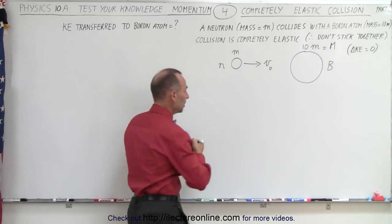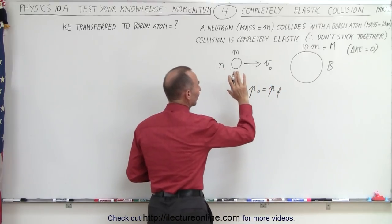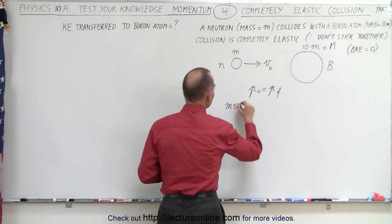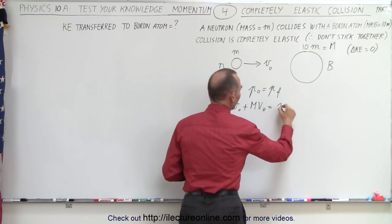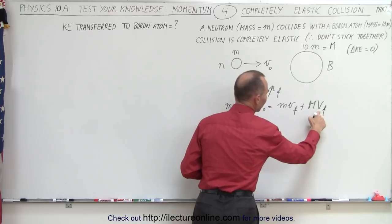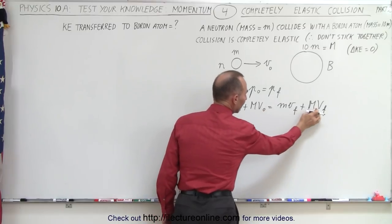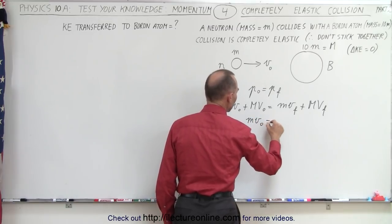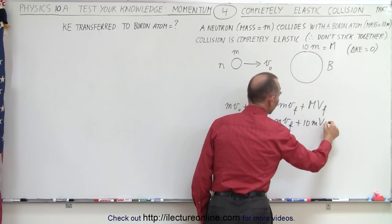We start out by using the conservation of momentum equation, where P_initial equals P_final. For an elastic collision where they don't stick together, it will look as follows: M times V_initial plus big M times V_initial — which in this case is zero — equals M times V_final plus big M times V_final, the V_final of the boron and V_final of the neutron. Since the boron's initial velocity is zero and its mass is 10M, we get M·V_initial equals M·V_final plus 10M·V_final.